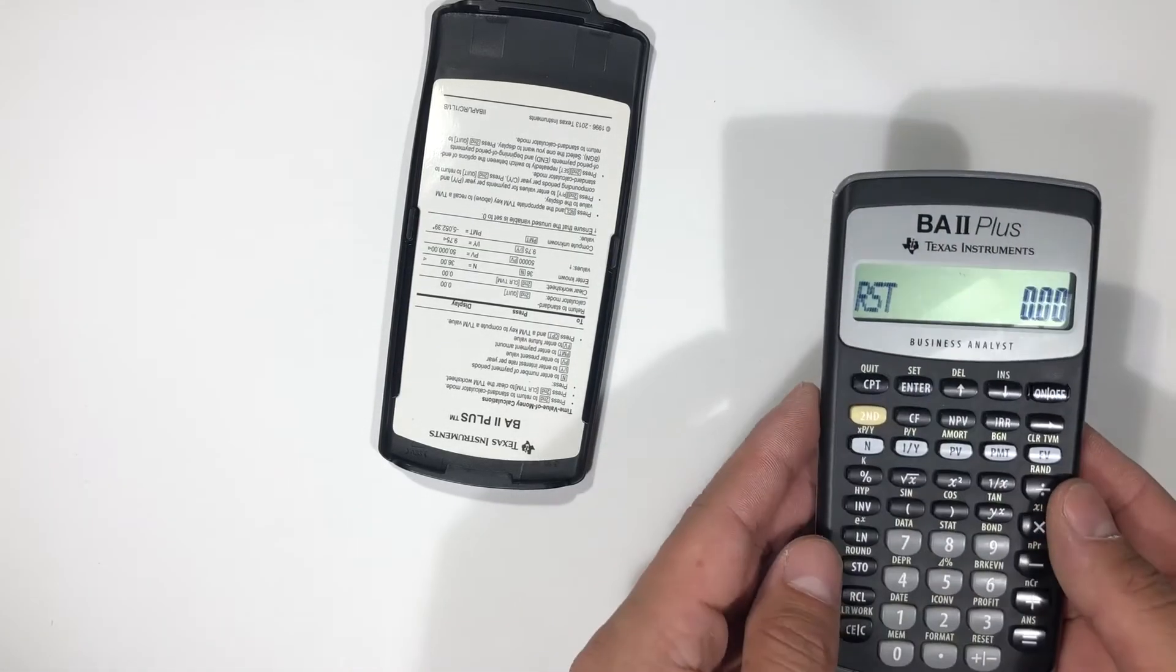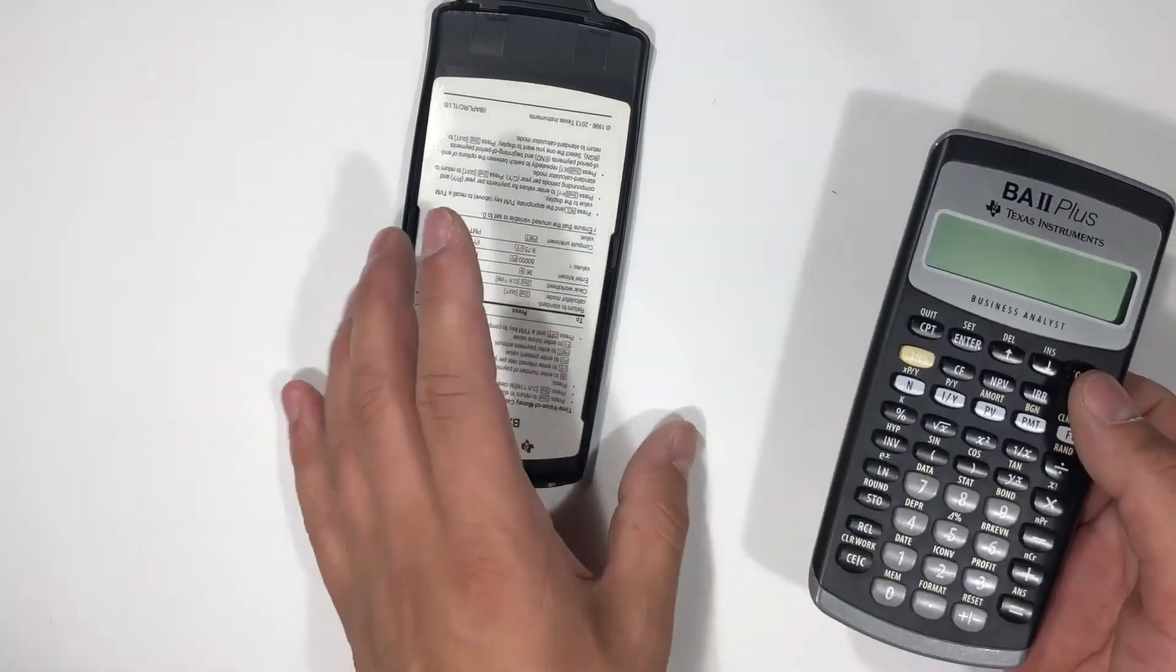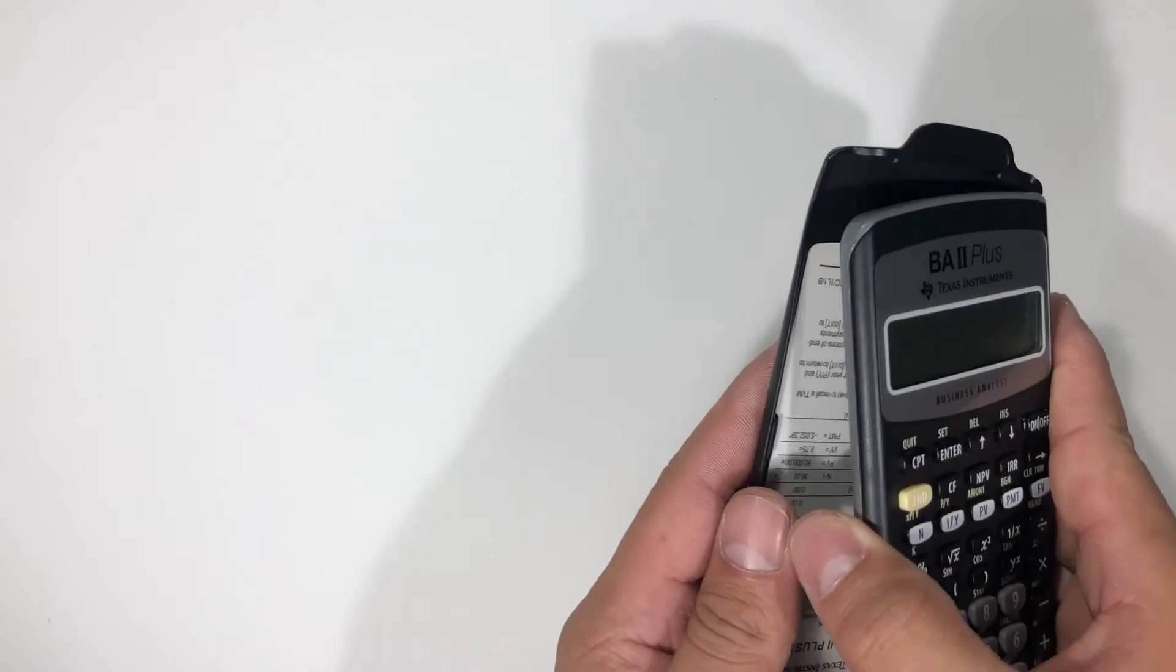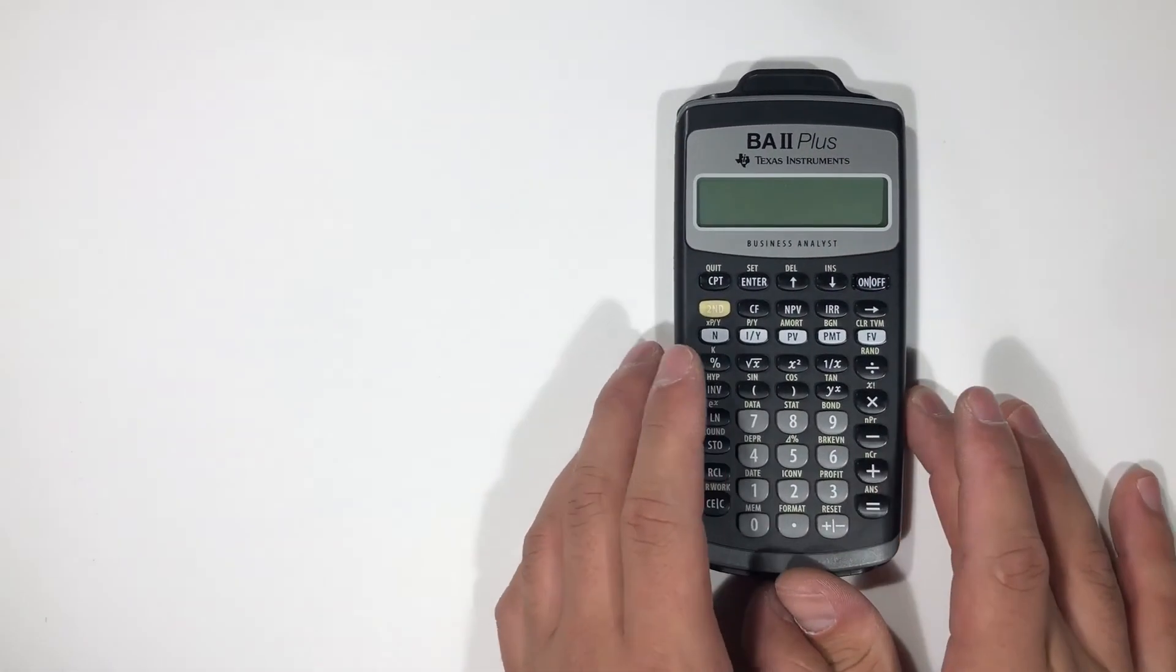One more time, the other hard reset is to just take the battery out altogether for a full reset of the calculator.